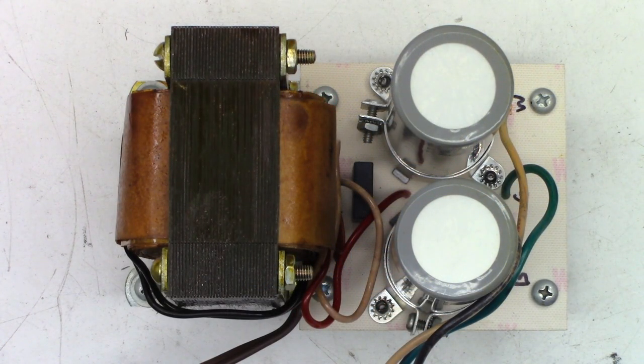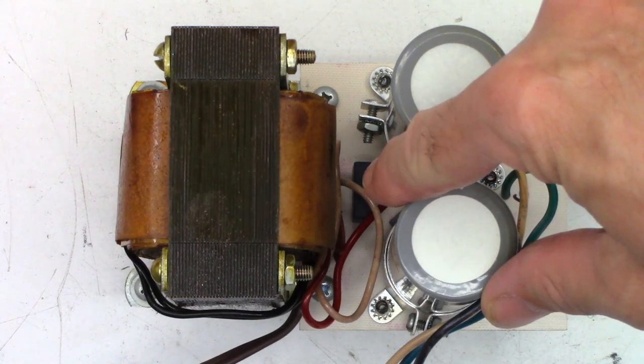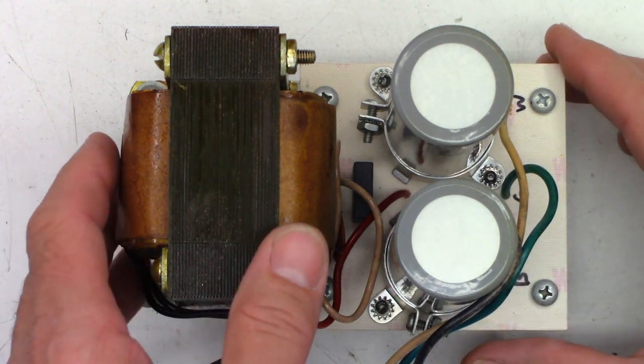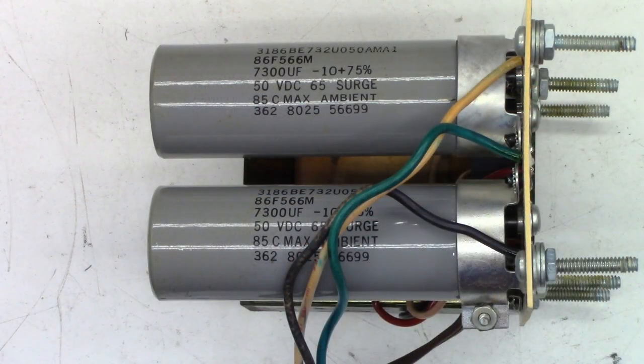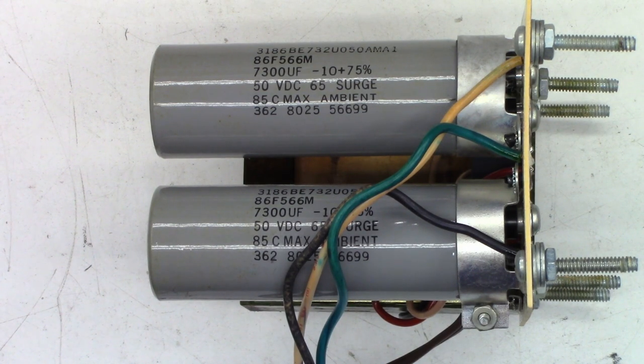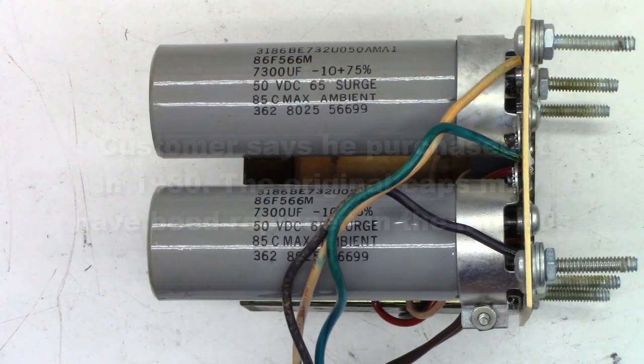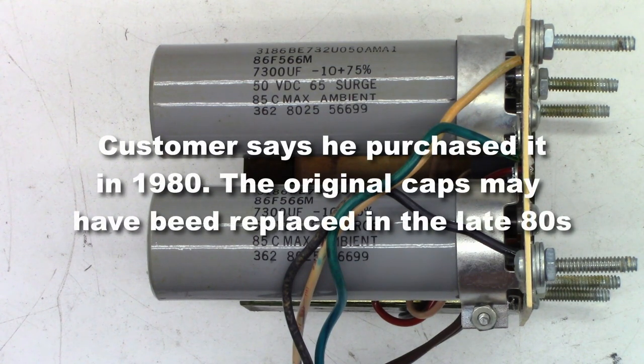Here is the power supply. It incorporates the power transformer, the bridge rectifier that you can see down in here, and the two main filter caps. They are 7,300 microfarad caps at 50 volts DC, and they'll accept a 65 volt surge. And look at the date code on these, 86. Looking at the top of this one, 3186. Chances are it's the 31st week of 1986 when this thing was new.